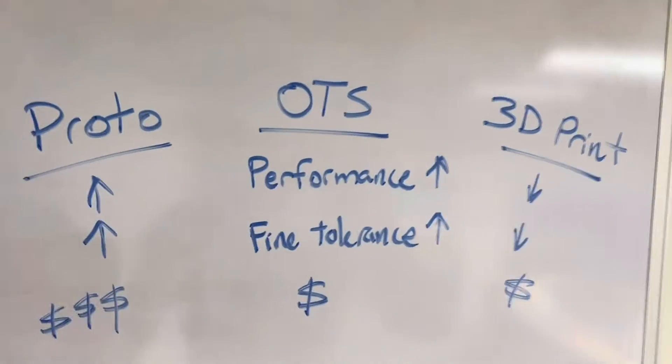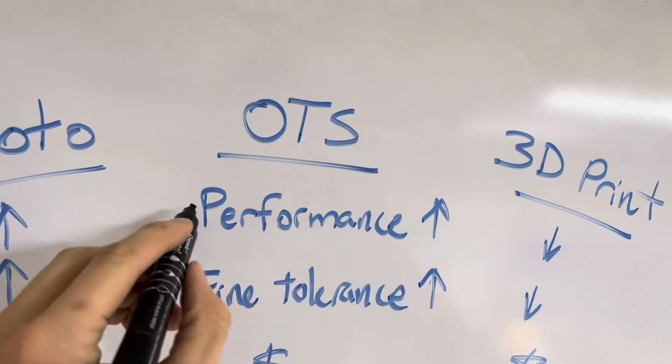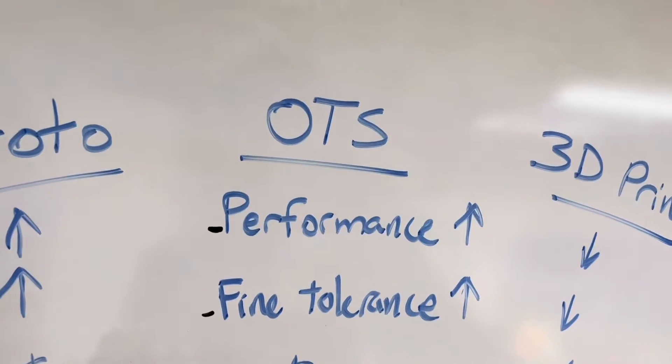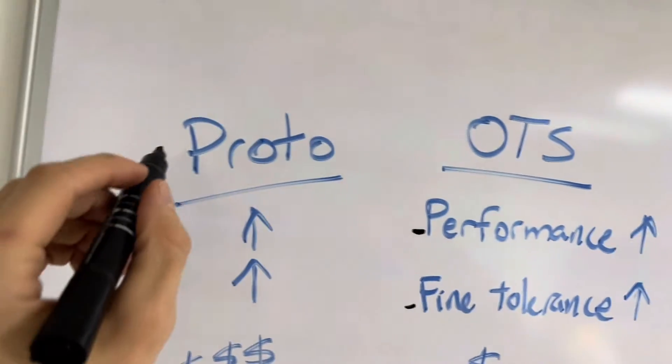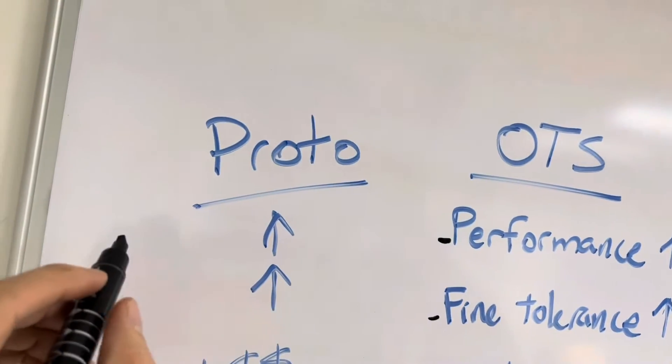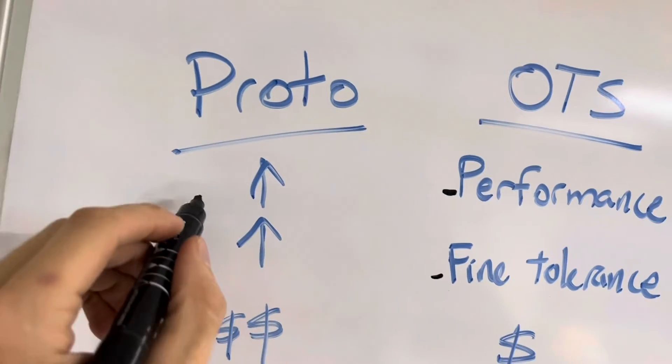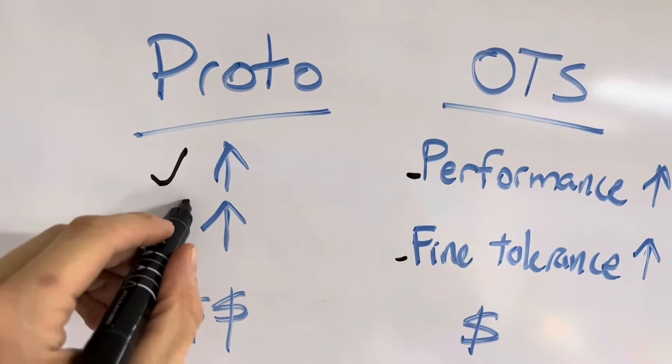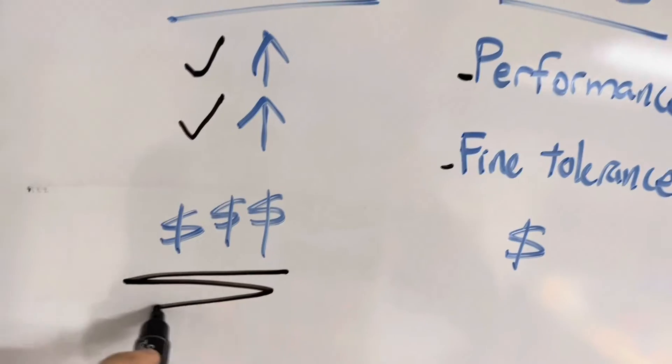If you look overall, you have performance of the part, you have can you achieve a fine tolerance in prototyping like custom CNC machine parts. You achieve both of those, but the price is very, very high with traditional manufacturing methods on prototypes. Then you have 3D prints - they don't meet the same performance level, they don't meet the fine tolerances.